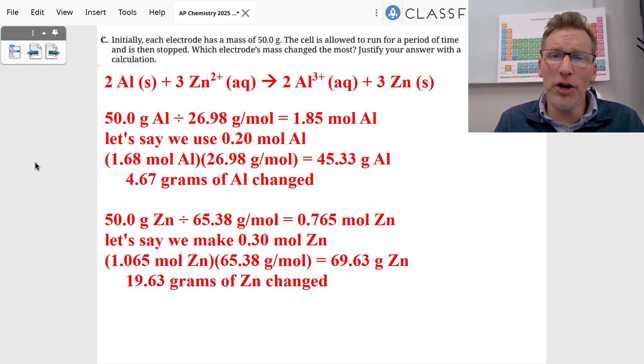If 0.3 moles of zinc are made in this molar ratio, then that's 69.63 grams of zinc. That means we went from 50 grams up to 69.63 grams. That's a change of 19.63 grams.